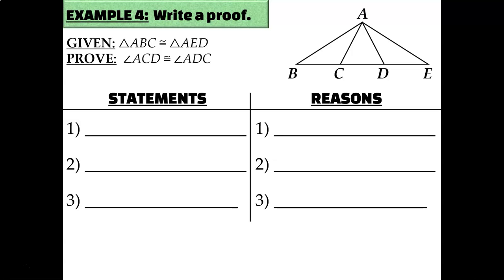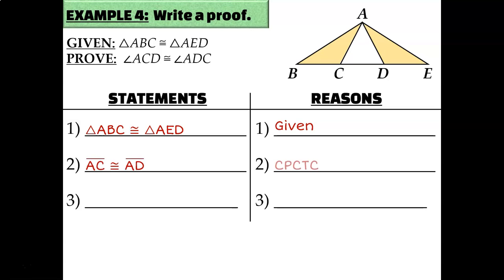In our next example, the given actually gives us congruent triangles — triangle ABC is congruent to triangle AED — so we don't have to prove congruence. We're trying to prove that angle ACD and angle ADC are congruent, which are angles in the white triangle in the center — not the yellow triangles. If I knew that white triangle was isosceles, those would be its base angles. Do I know AC and AD are congruent? Yes — they're corresponding parts of the given congruent triangles. So since those two sides are congruent, the two angles are congruent by the base angles theorem.